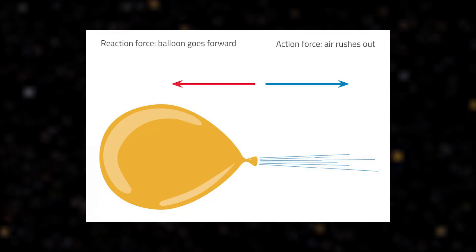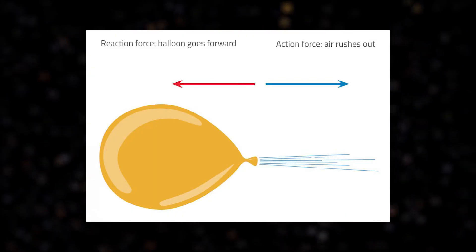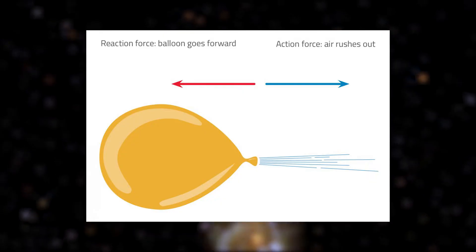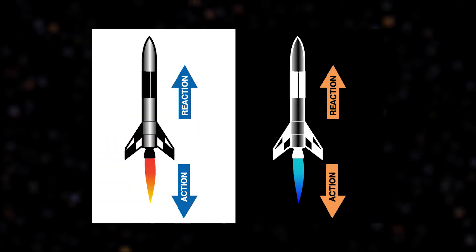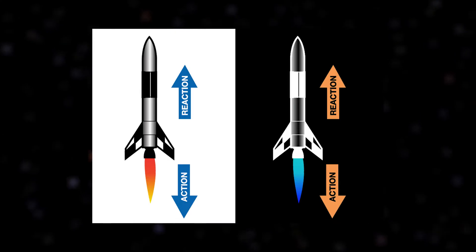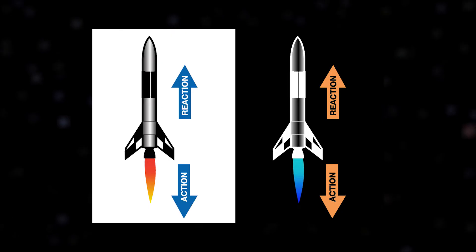Basically, if some object exhausts mass in one direction, it escapes the system, this object starts moving in the opposite direction, if other forces don't interfere. And the same principle works in case of both chemical and ion engines. They both expel material to accelerate, but then differences begin.